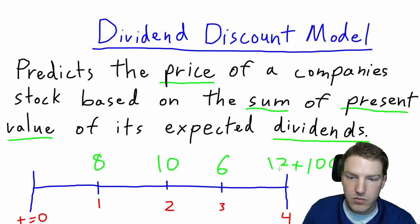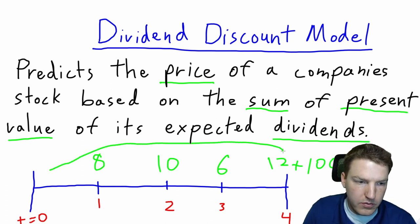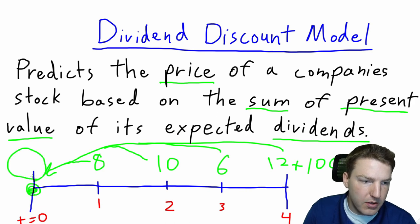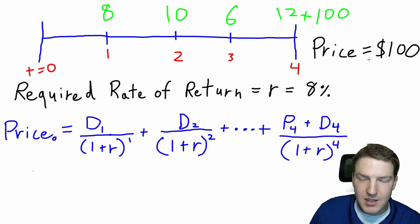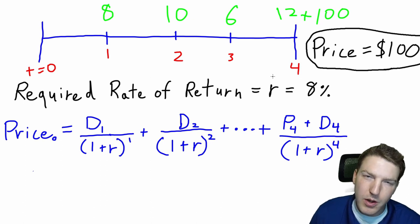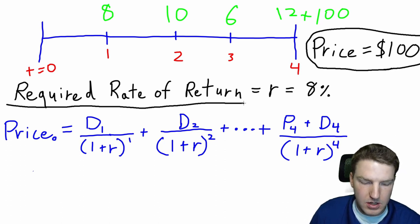We also expect this stock's price to be a hundred dollars at the end of year four, so the cash flow at the end of year four will be twelve plus one hundred. What we want to know with the dividend discount model is: if we discount all four of these values back to today, what should the fair price of this stock be? Let's pretend the market is pricing this hypothetical stock at one hundred dollars today. We want to find out if this is a good stock to purchase, and we'll need to make an assumption about the required rate of return.